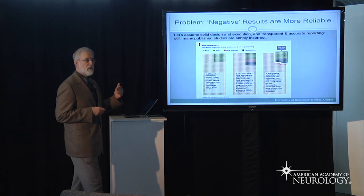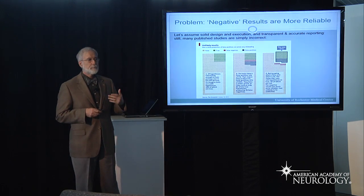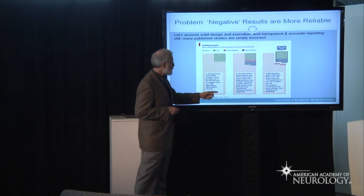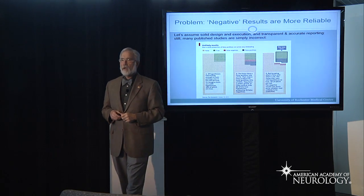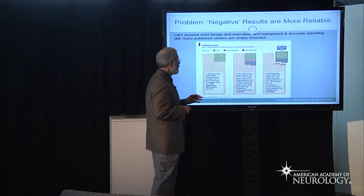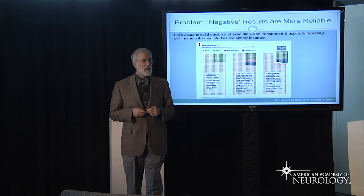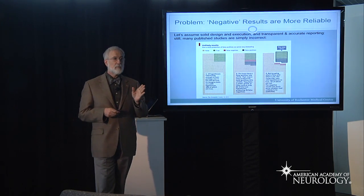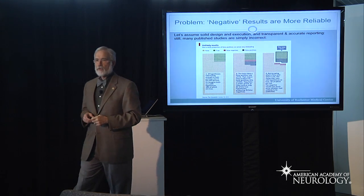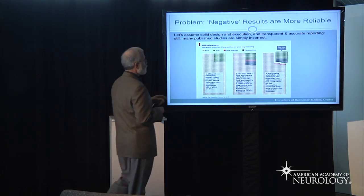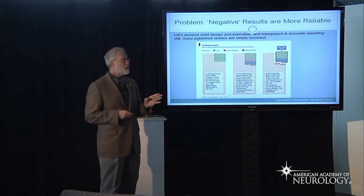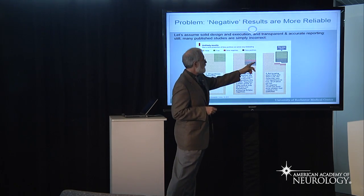Let's assume you have a thousand hypotheses you're interested in testing. Studies have estimated that about 10% of those hypotheses may be true — so 100 of the thousand are true. You don't know that; you haven't done the study yet. Your test usually allows a false positive rate of 5% — that's the p=.05 statistical level — meaning there are 45 false positives from the remaining 900 false hypotheses. Because many clinical trials are only powered to detect 80% of differences, that means there are going to be 20 false negatives.